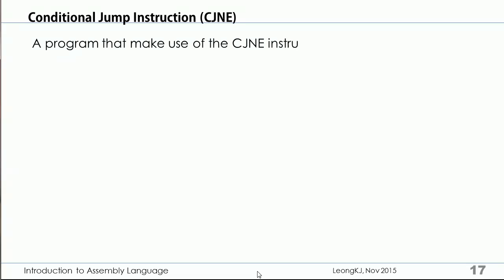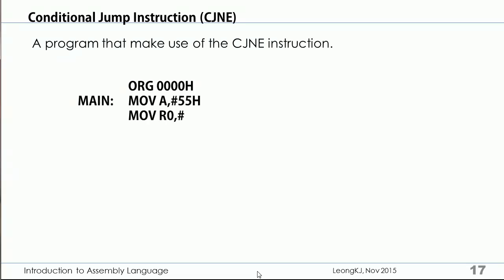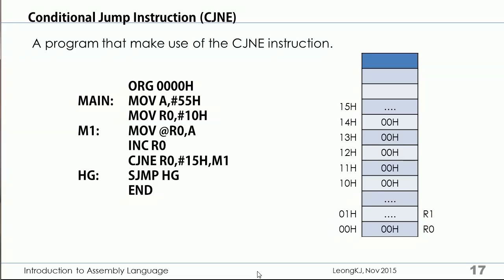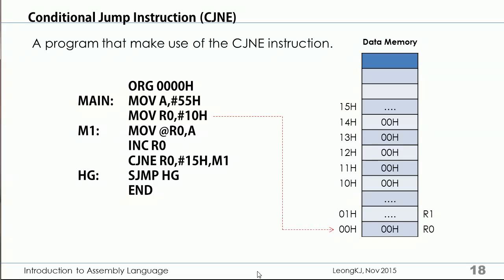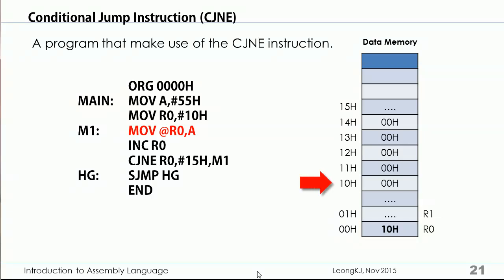Let's look at a program that uses the CJNE instruction. Assuming these are the initial contents in data memory: the first instruction loads 55h into the Accumulator, then 10h is copied to Register R0. The instruction MOV @R0, A copies the Accumulator to the indirect address in R0. Since R0 contains 10h, the Accumulator content is copied to data location 10h.